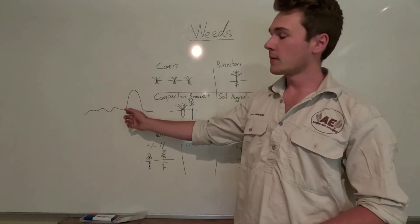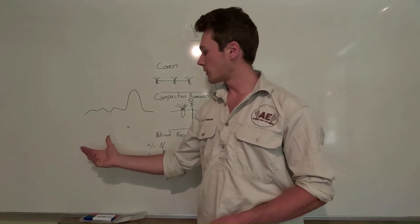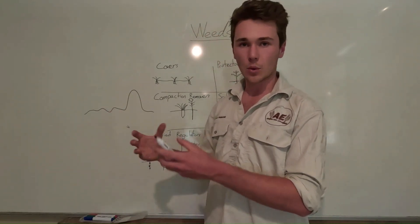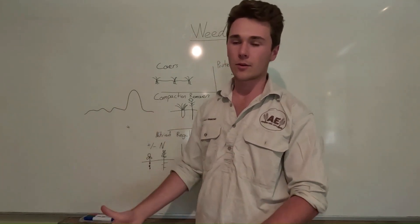So for example, like lamb's quarter, it prefers high nitrogen soils. Therefore, when we have a niche of nitrogen excess, that is more likely to out-compete everything else.